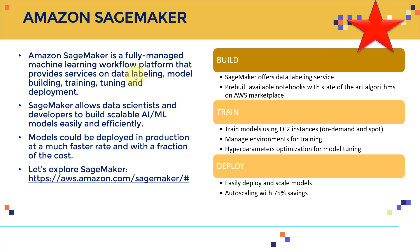Luckily, Amazon SageMaker provides services to label data. Using Amazon SageMaker Ground Truth, we can label our data and leverage the entire global workforce — the Mechanical Turks — to label the data for us. You can put bounding boxes around images, label text, and perform semantic segmentation.